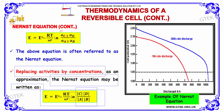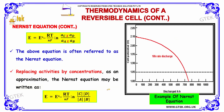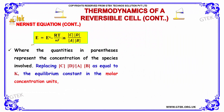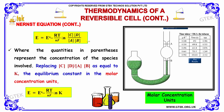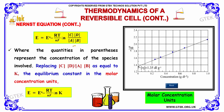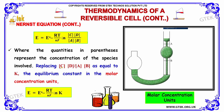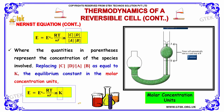In terms of concentration, the Nernst equation becomes: E = E° − (RT / NF) ln ([C][D] / [A][B]), where the quantities in parentheses represent the molar concentrations of the species involved. Replacing the ratio [C][D] / [A][B] with the equilibrium constant K, the equation in molar concentration units becomes: E = E° − (RT / NF) ln K.